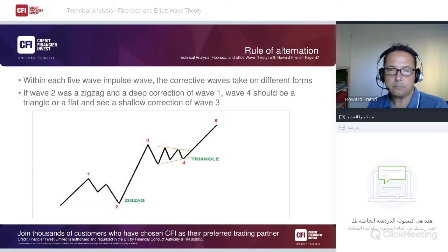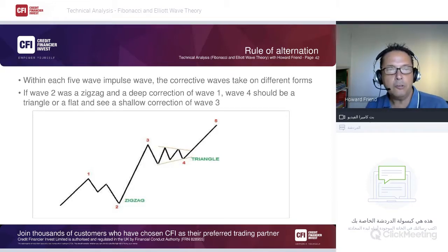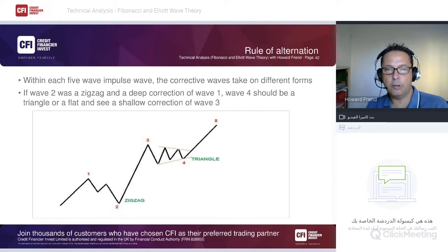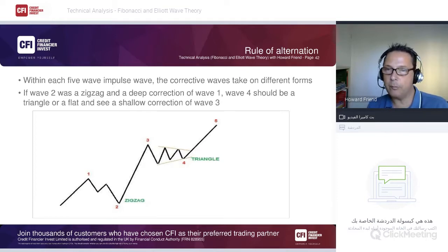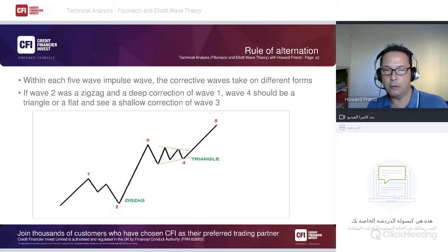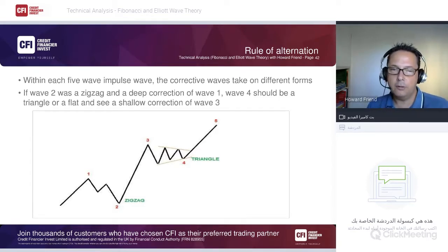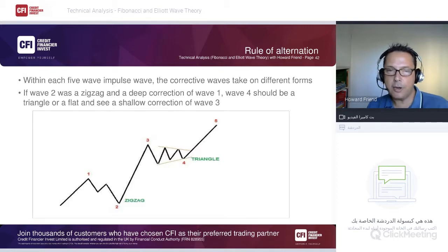The rule of alternation: within each five-wave sequence, waves two and four are typically very different in character. If wave two is a deep correction (a zigzag — five-down, three-up, five-down), then wave four will likely be a shallow, time-based correction such as a triangle. Alternation applies both in depth and in type.